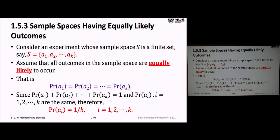Because the probability of the state space is one — that's one of our axioms — if we sum up all the probabilities of each individual component of the state space, you get back one. Using the condition that they're all equal, that sum equals K times the probability of the first one. So the probability of the first one is one over K, meaning the probability of all events is one over K. This is called the uniform distribution — the first distribution we've seen in this class.